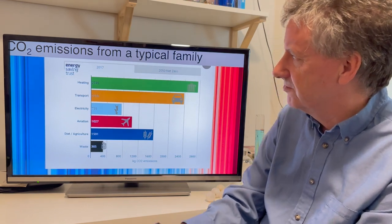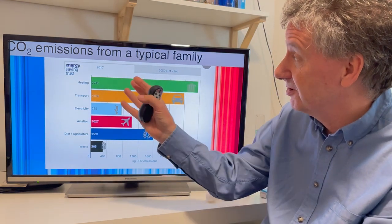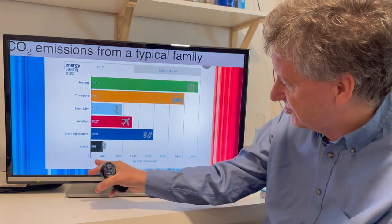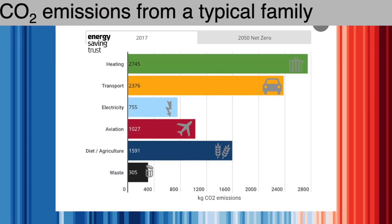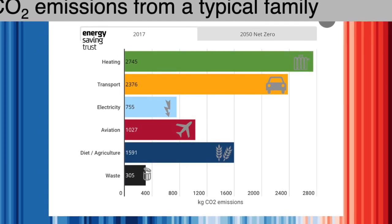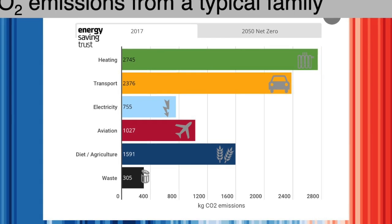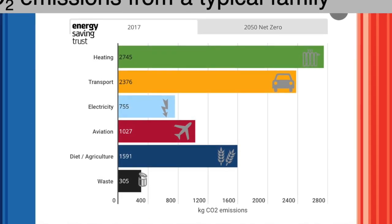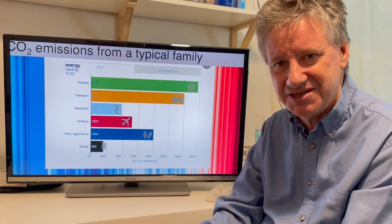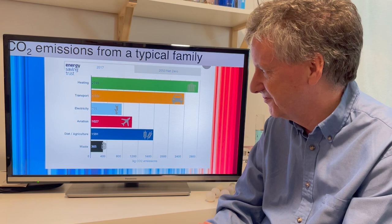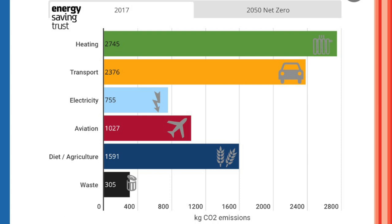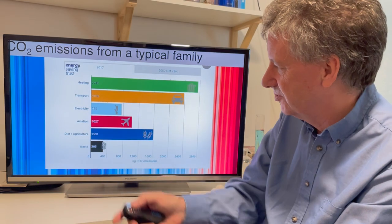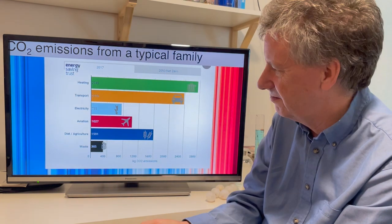This chart shows the carbon dioxide emissions from a typical family in the UK. Along the bottom here it's kilograms — this one says 2,700 kilograms, that's 2.7 tons of emissions associated with heating. Here's transport, electricity, aviation — that's a ton — diet and agriculture, waste. These different categories are in tons: 2.3 tons and so on.